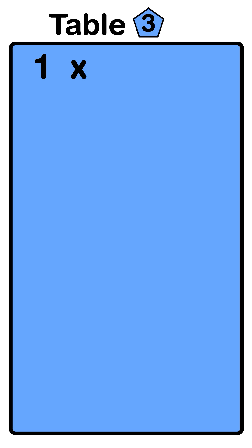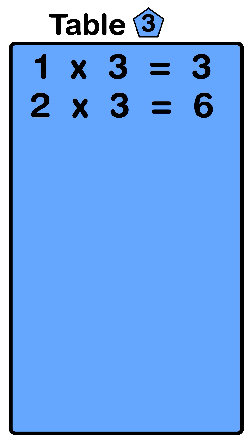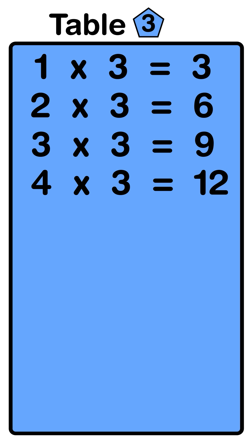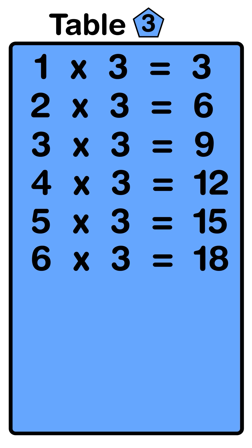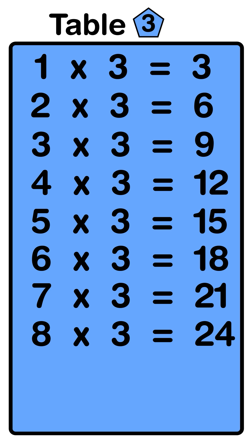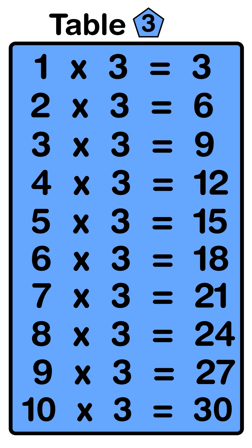One three's are three, two three's are six, three three's are nine, four three's are twelve, five three's are fifteen, six three's are eighteen, seven three's are twenty-one, eight three's are twenty-four, nine three's are twenty-seven, ten three's are thirty.